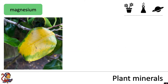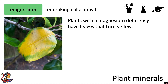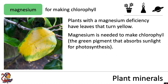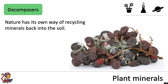And finally, magnesium. Magnesium is used for making chlorophyll. Plants with a magnesium deficiency have leaves that turn yellow. Magnesium is needed to make chlorophyll, which is the green pigment that absorbs sunlight for photosynthesis. The plants won't be able to photosynthesize as much, and this will also affect plant growth.